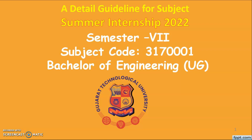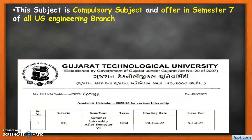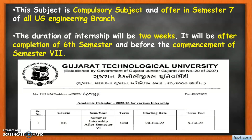The subject code for the summer intensive is 3170001. As per the circular published by GTU, students need to go for the intensive for 2 weeks before commencement of the 7th semester and after completion of the 6th semester. As per the guideline, the intensive period is from 20th June 2022 to 9th July 2022.